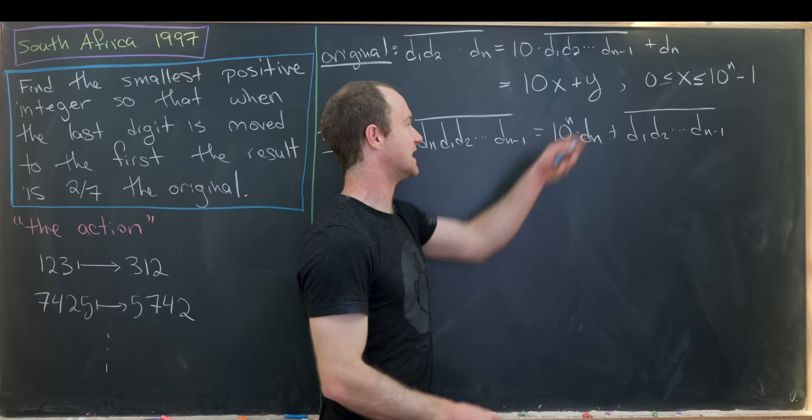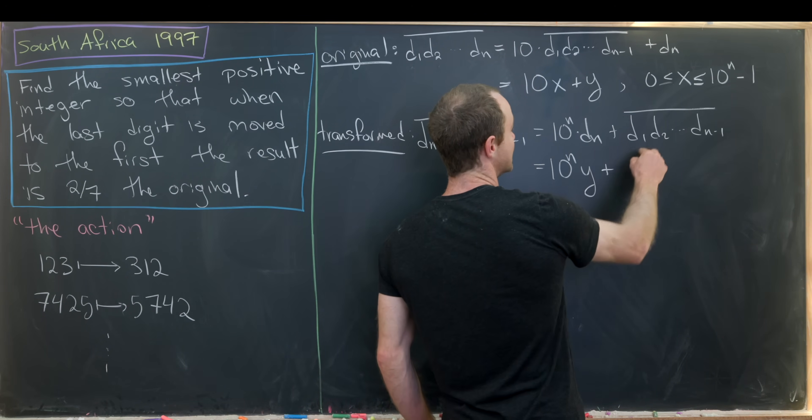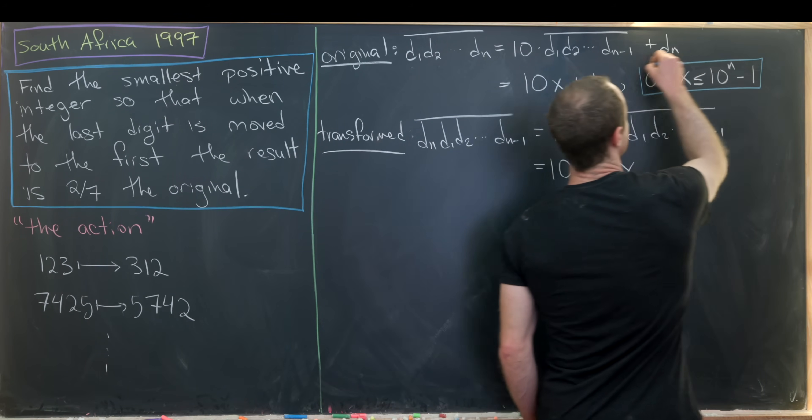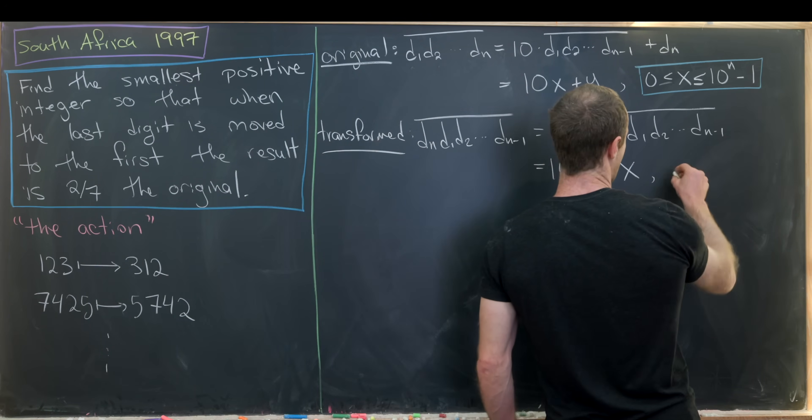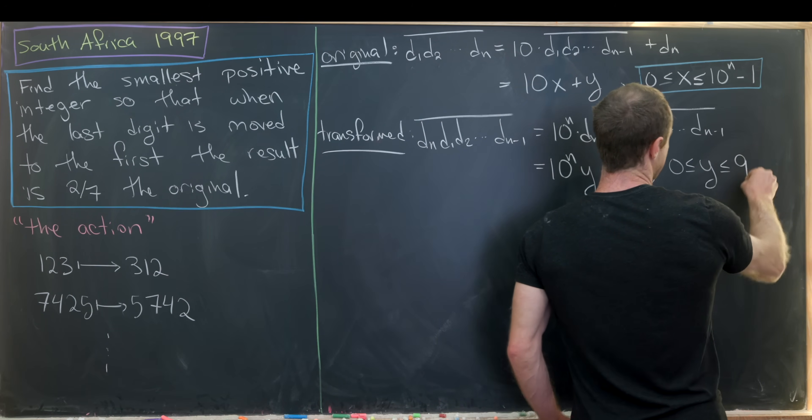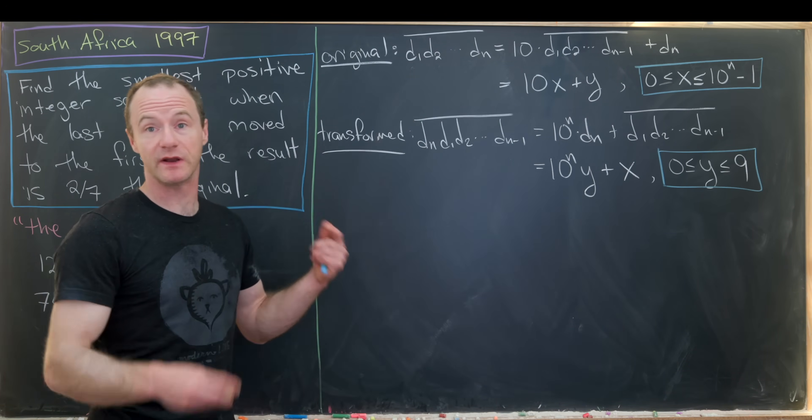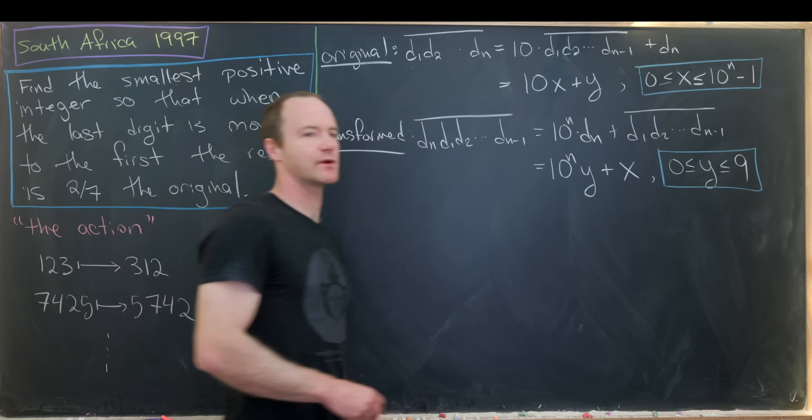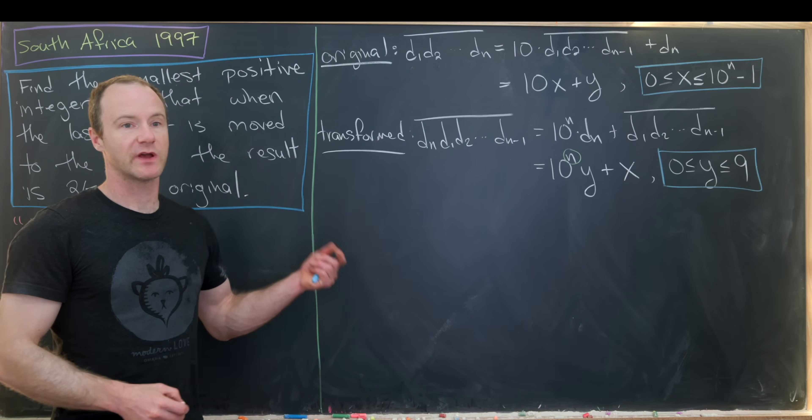But let's notice that this dn was what we called y. So this is 10 to the n times y. And this guy right here is exactly what we called x. So let's notice that we've got x is between zero and this 10 to the n minus one, we can also get a bound on y. So let's notice that y is between zero and nine. So now that we've got this expression, we can get the two sevenths into the scenario and set up an equation involving x and y. And the interesting thing that's going on here is we will first figure out the form of this exponent n.